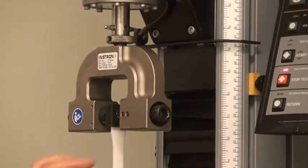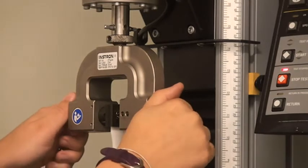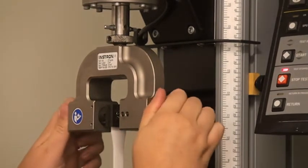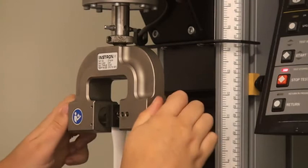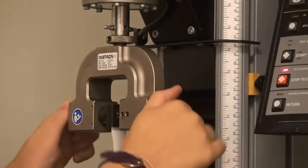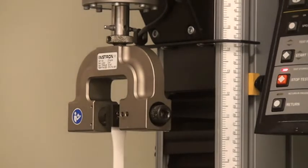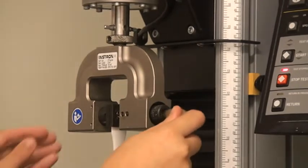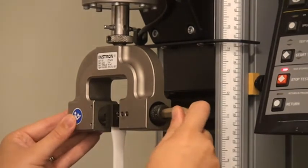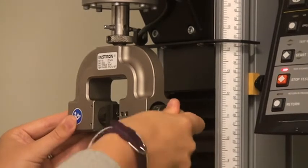Using the markings on the sides of the carriage as a guide, use the screw knobs to make sure your sample is centered in the upper grip. Use the hex wrench to tighten the screw knobs on one side to prevent the sample from slipping during testing.